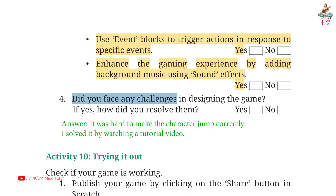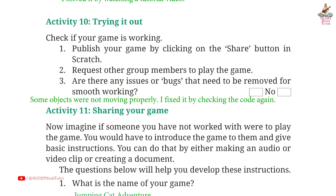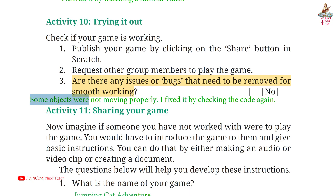Question 4: Did you face any challenges in designing the game? If yes, how did you resolve them? Answer: Yes. It was hard to make the character jump correctly. I solved it by watching a tutorial video. Third: Are there any issues or bugs that need to be removed for smooth working? Answer: Yes. Some objects were not moving properly. I fixed it by checking the code again.